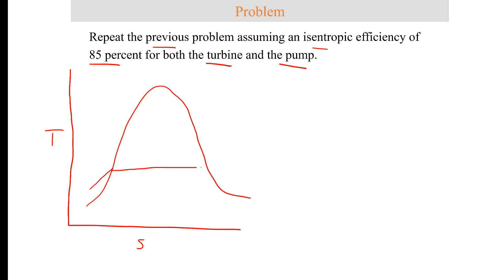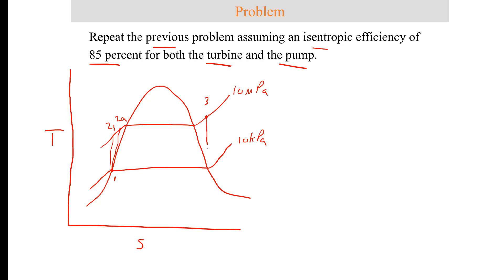On the revised TS diagram, we still have two constant pressure lines at 10 kPa and 10 megapascals. We still assume saturated liquid entering the pump, but instead of isentropic compression, the actual process has a higher exit enthalpy than the isentropic value. Similarly, the turbine expansion from state 3 to state 4 is no longer isentropic, so the actual enthalpy exiting the turbine is higher than the isentropic value.